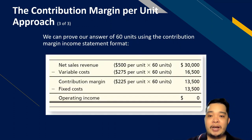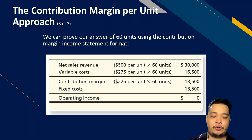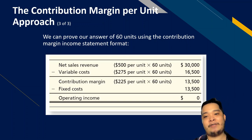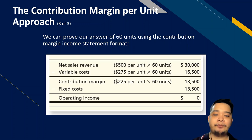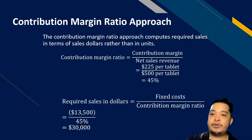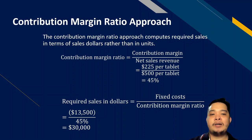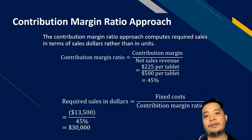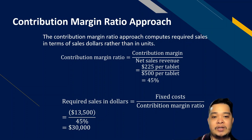To verify that 60 units is correct, we can prepare a contribution margin income statement: net sales of $30,000 (500 times 60 units) minus variable costs of $16,500 (275 times 60 units) gives a contribution margin of $13,500, which equals fixed costs of $13,500, resulting in zero operating income. The last approach is the contribution margin ratio approach, which computes the required break-even sales in dollars. The formula is: Required Sales in Dollars equals Fixed Costs divided by the CM Ratio.